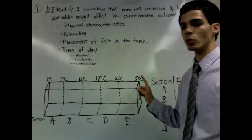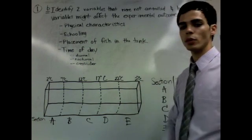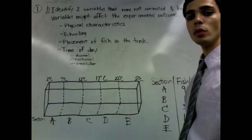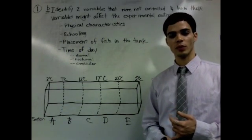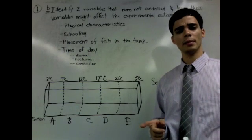Some things that were not controlled were the physical characteristics of the fish. During no time did the passage mention whether or not we were using male or female fish, for example. Now, why is this important?